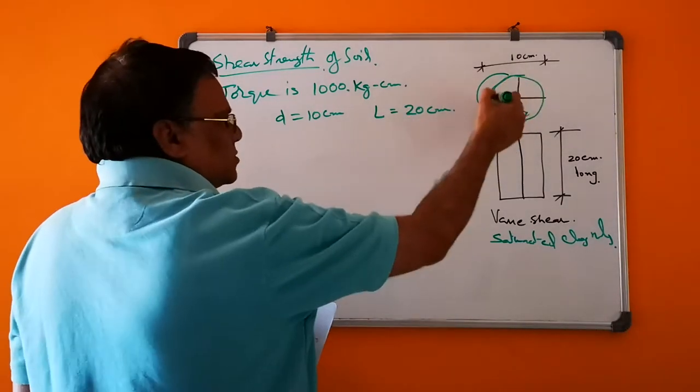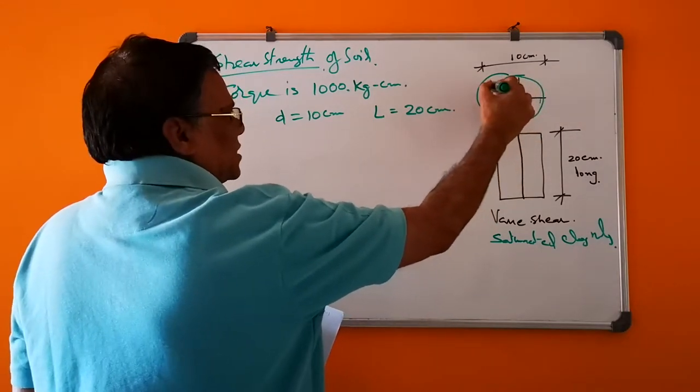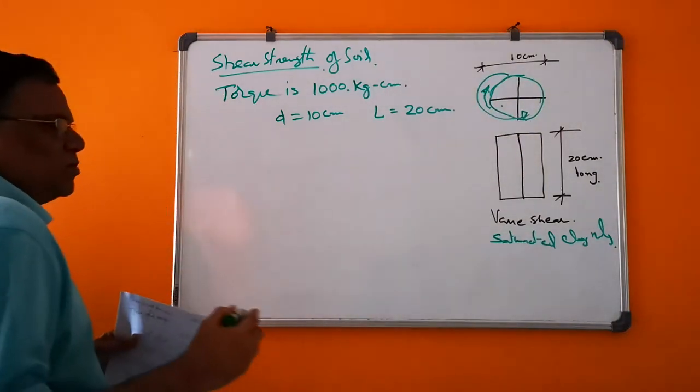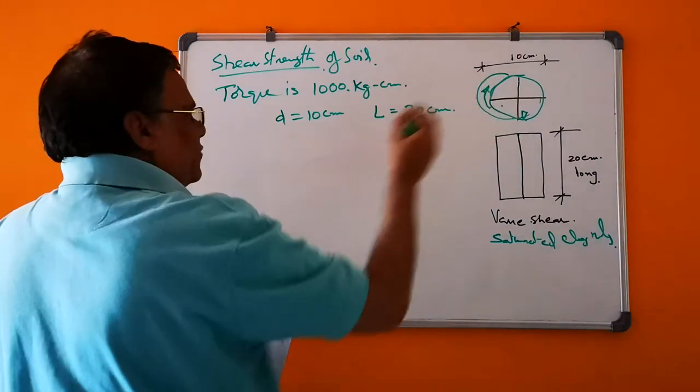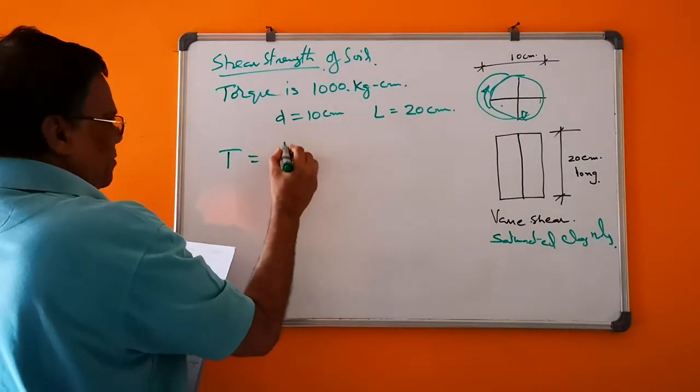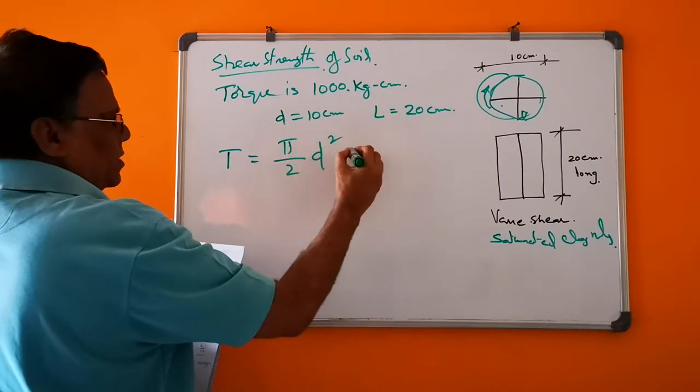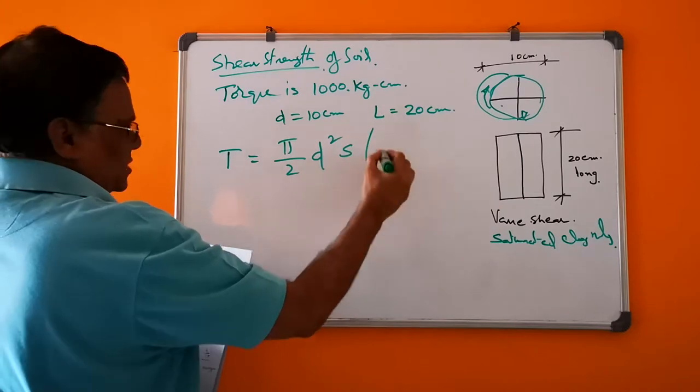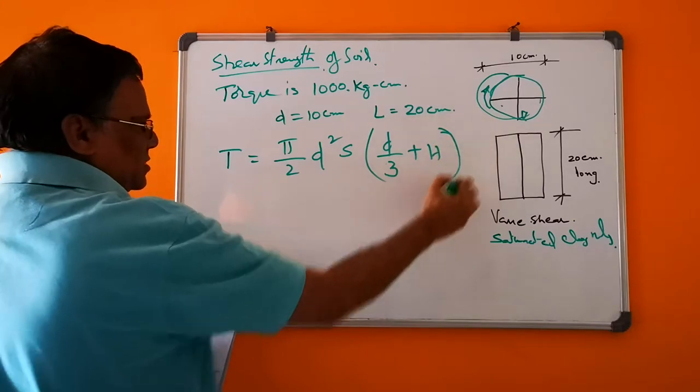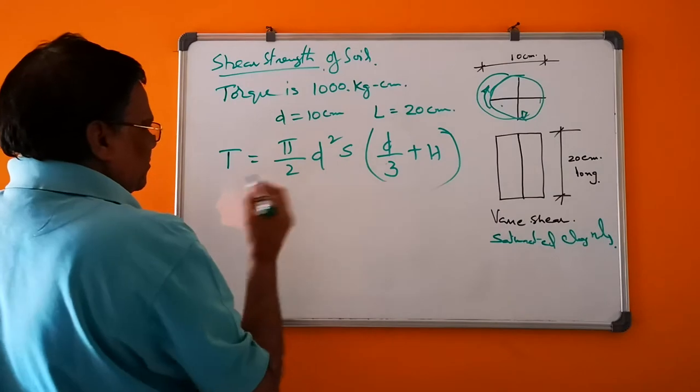So it rotates and naturally the shear strength acts opposite until failure. So T = π/2 D² S (D/3 + H) is the formula given, where S is the shear strength of the soil.